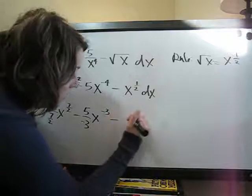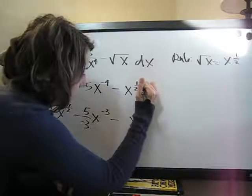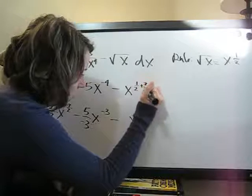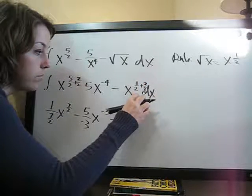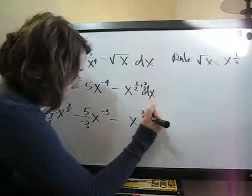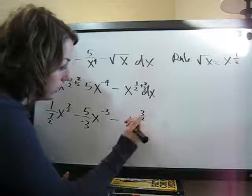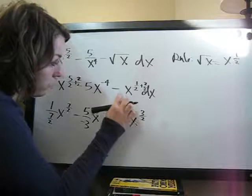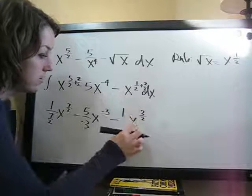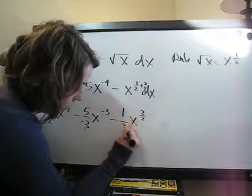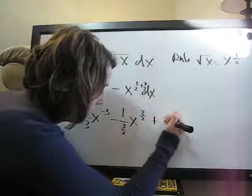And then x, 1 half plus 1, 2 over 2, is of course 3 over 2. 1 plus 2, 3 over 2. And then 1 is the coefficient that's implied here, divided by the new exponent, which is 3 halves. 1 over 3 halves, and then plus c.